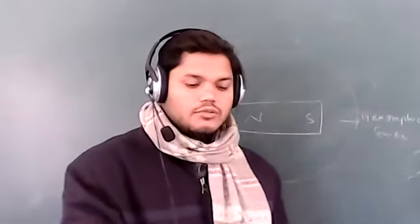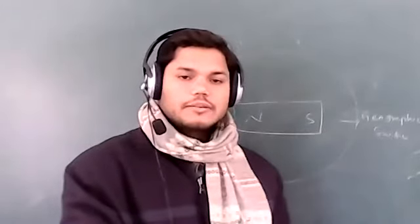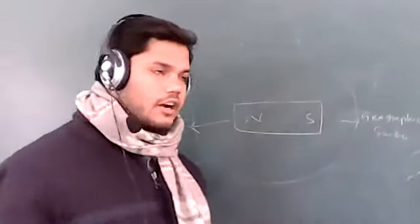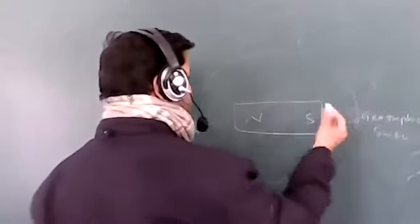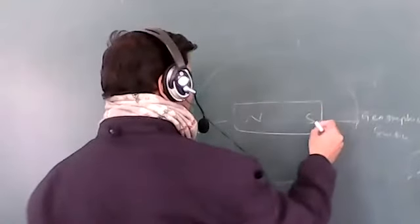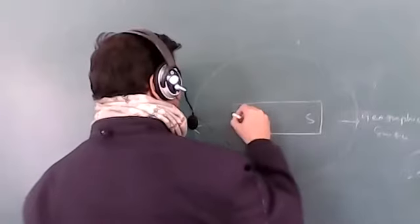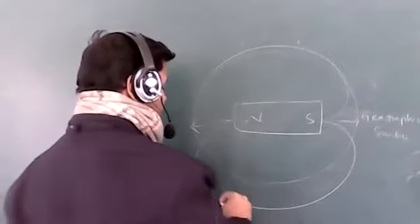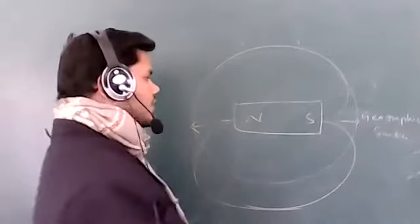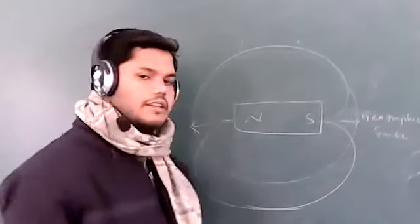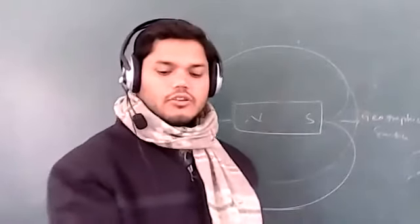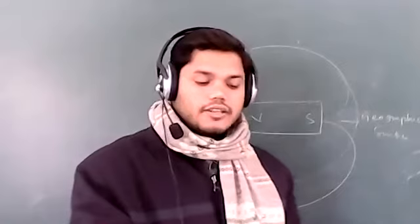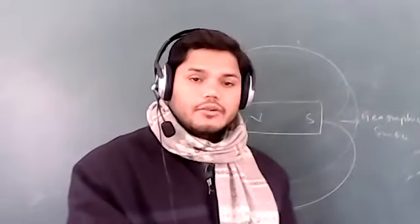The space around the magnet where it can experience the force of attraction or repulsion is called the magnetic field. Around the magnet, a field is created — from the north pole the field goes towards the south pole. This space around the magnet where the magnet can influence forces of attraction or repulsion is called the magnetic field of that particular magnet.